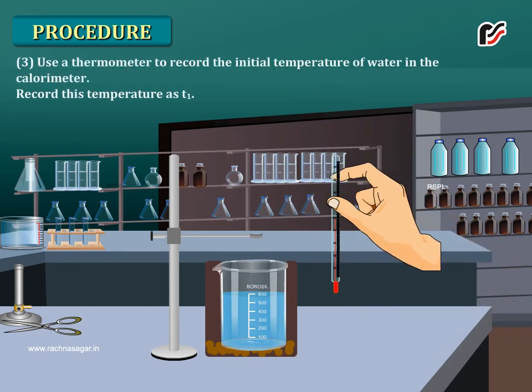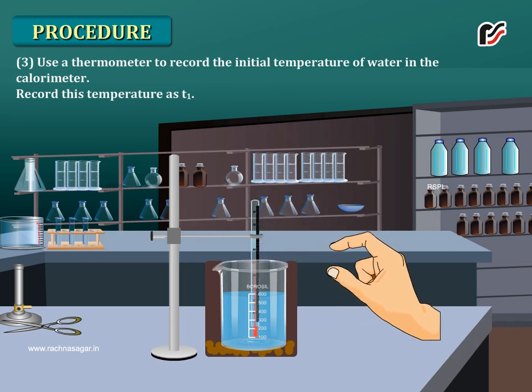Use a thermometer to record the initial temperature of water in the calorimeter. Record this temperature as T1.